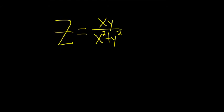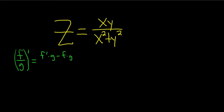In this problem we have to find the partial derivative of z with respect to x and with respect to y. We're going to use the quotient rule. To recall the quotient rule, here is the formula. We have f over g and we take the derivative — it's the derivative of the top times the bottom, minus the top times the derivative of the bottom, over the bottom squared.